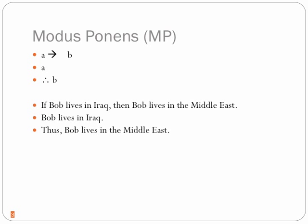Suppose that if Bob lives in Iraq, then Bob lives in the Middle East — and we don't have to suppose because that's true. And then you find out that Bob really does live in Iraq. Well, Bob lives in Iraq and that guarantees he lives in the Middle East. So you know Bob lives in the Middle East. That's modus ponens. Any statement you substitute for A and B will yield a valid argument. The symbolization: I arrow M, then I, therefore M — the symbolization matches the form of modus ponens.